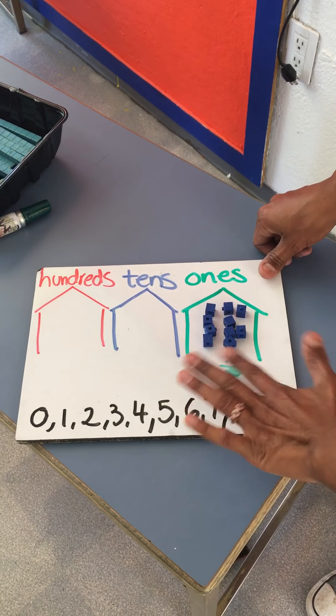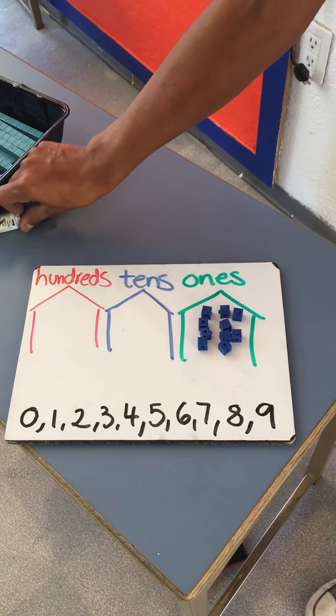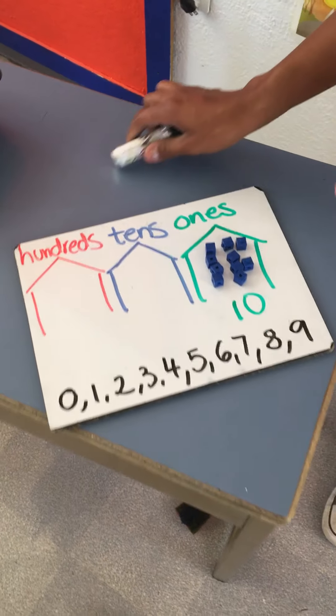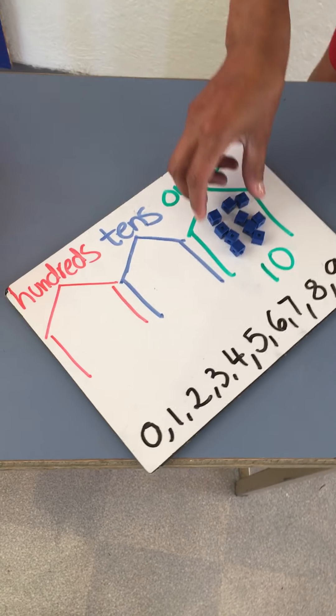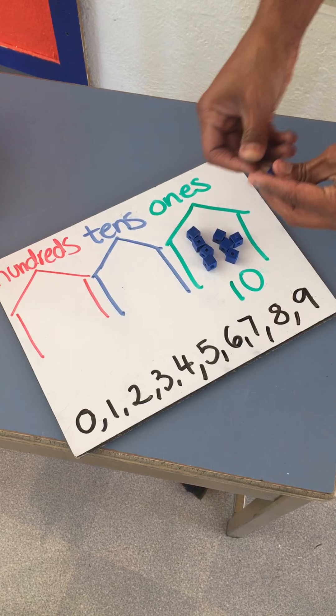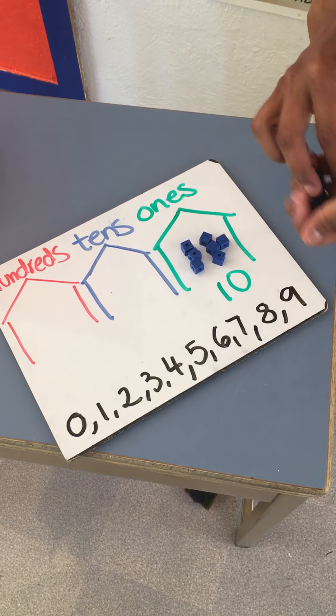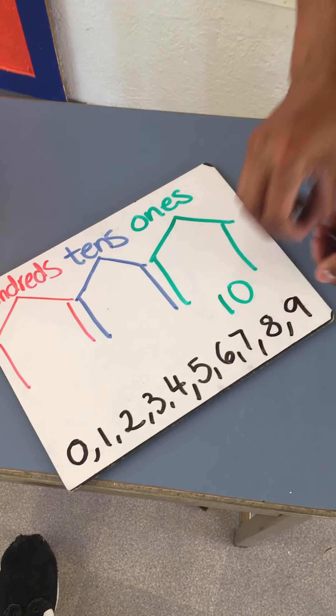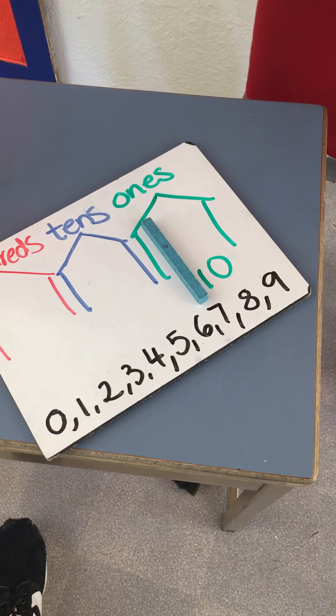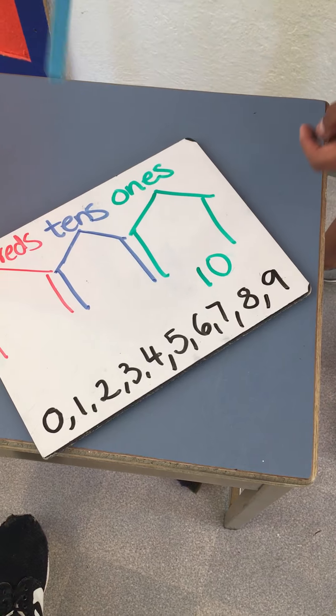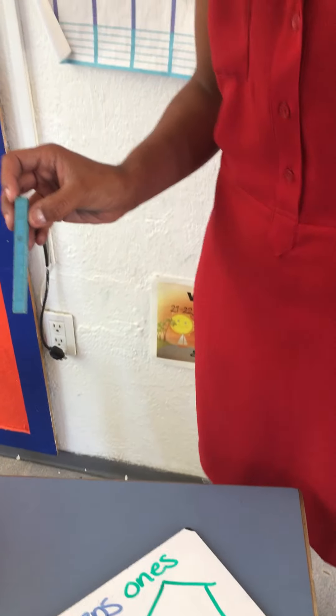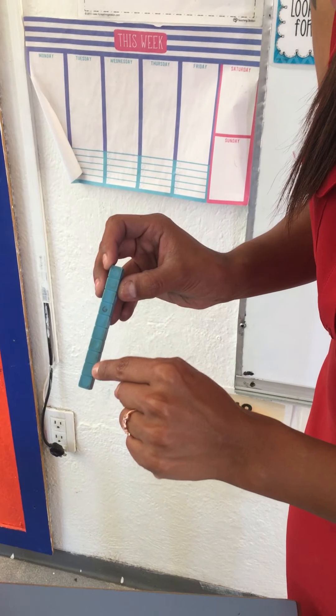And all of a sudden, six more come and join here. Five, six, seven, eight, nine, ten. Now we have ten ones. Can they fit here? No. What happens is that they line up all together and then some magic happens.